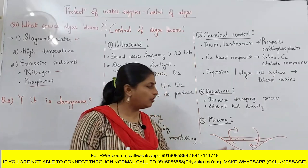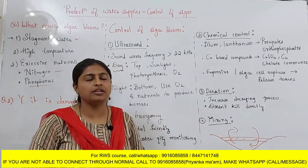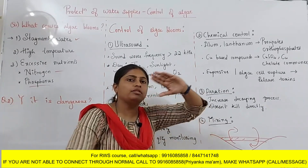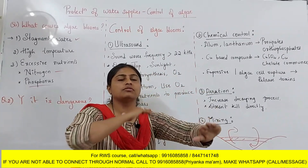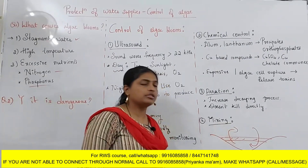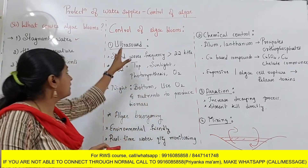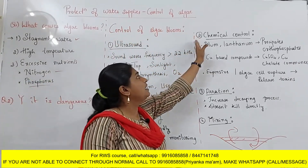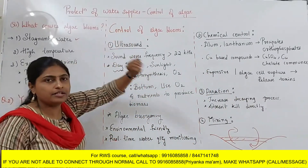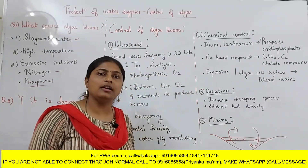However, practically it is very difficult and very costly — a huge setup is required to circulate and disturb the water. It also affects other aquatic animals slightly. So this is not practically feasible. The mostly used methods for controlling algae are the ultrasonic method as well as chemical control. This is what you have to remember — a very small and interesting topic on protection of water supplies: how to control algae.